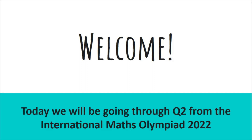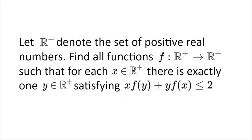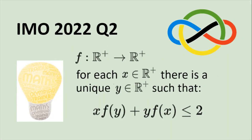Today we'll be going through question 2 from the International Maths Olympiad 2022. Let ℝ⁺ denote the set of positive real numbers. Find all functions f from ℝ⁺ to ℝ⁺ such that for each x in the positive reals, there is exactly one y in the positive reals satisfying x·f(y) + y·f(x) ≤ 2. Please pause the video here and have a think about the problem on your own before proceeding to the hints and solutions.